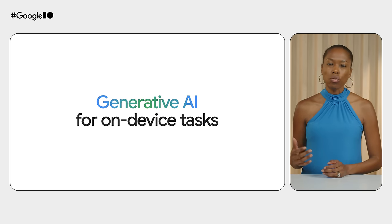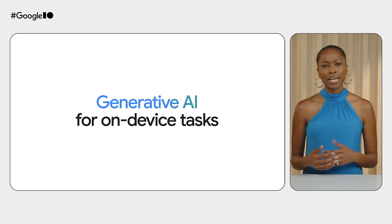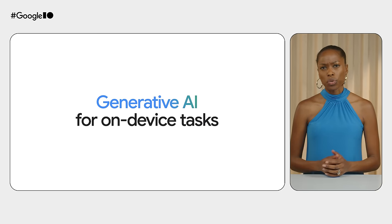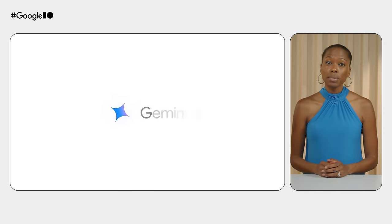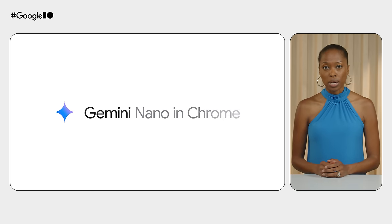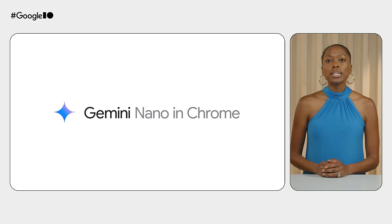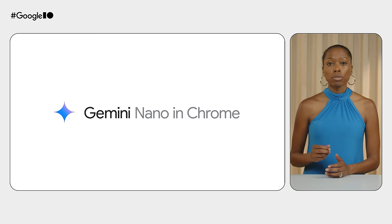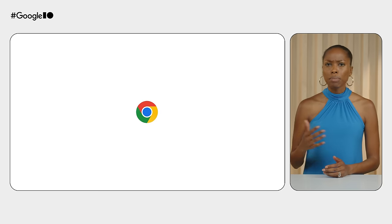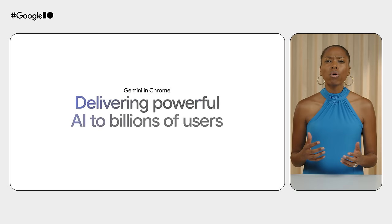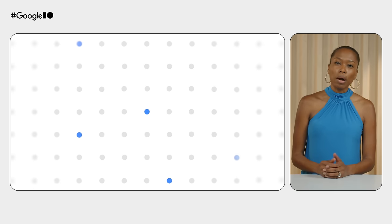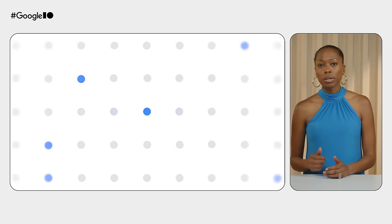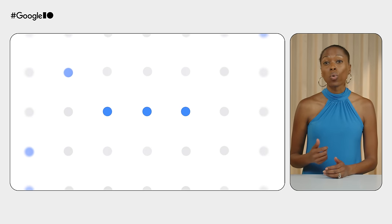AI continues to evolve how developers build and create, and it's no different for the web. Now you can harness the power of on-device AI with Gemini Nano built right into Chrome desktop. Gemini Nano is Google's most efficient model for on-device tasks. With built-in AI, soon you'll be able to deliver powerful AI features to Chrome's billions of users without having to worry about prompt engineering, fine-tuning, capacity, or cost.